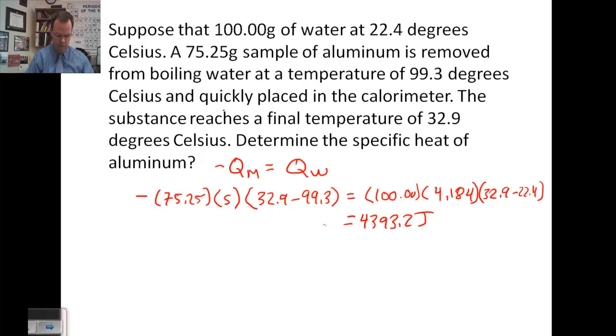On the right side of the equation, we get 4,393.2 joules that have been gained. 32.9 minus 99.3 times negative 75.25 gives us positive 4,996.6. So divide both sides by 4,996, and we get a specific heat here of 0.879 joules per gram degree Celsius.